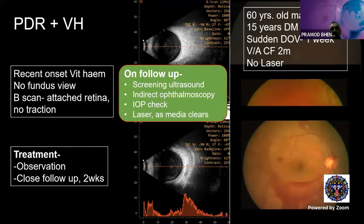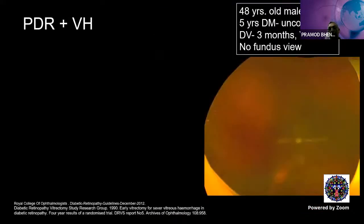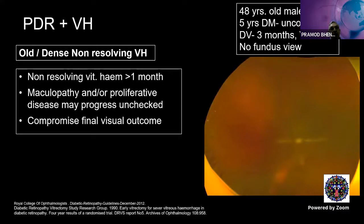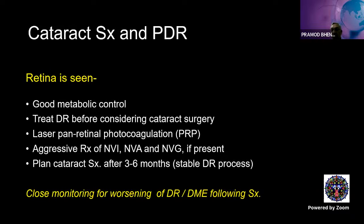Monitor intraocular pressure and add laser as media clears. Early surgery is indicated if the patient develops iris or angle neovascularization, or hemolytic or ghost cell glaucoma. For non-resolving old vitreous hemorrhage — such as a patient with three months of no fundus view — assessing macular status is difficult. If the disease is progressing and vision is at risk, vitrectomy is the preferred option, particularly for non-resolving vitreous hemorrhage, especially when combined with cataract.